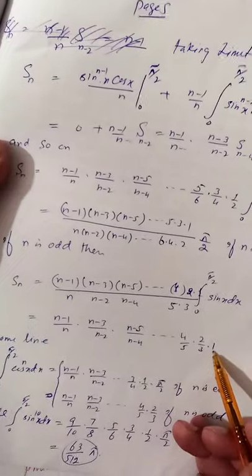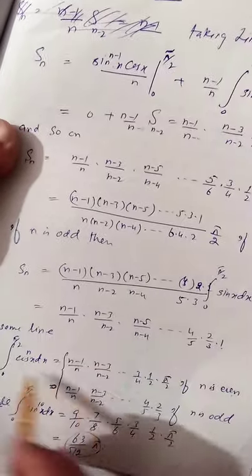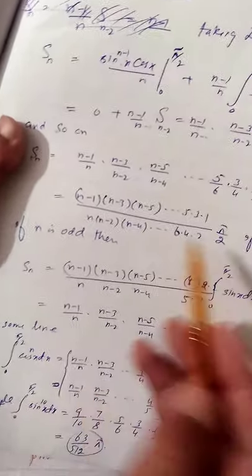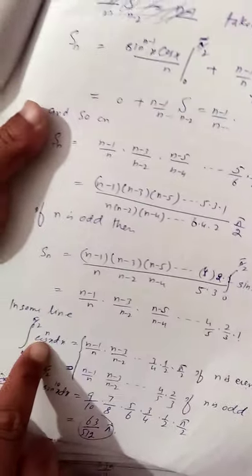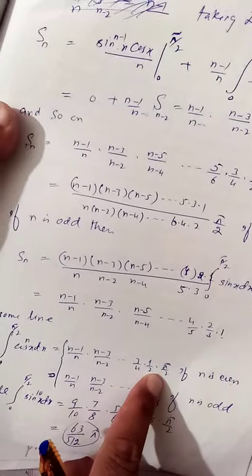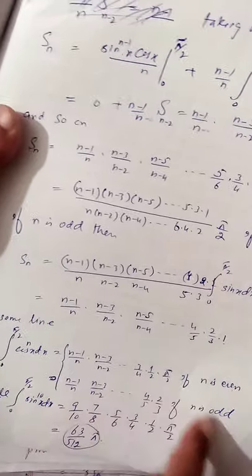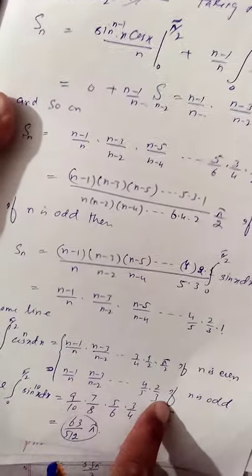Similarly, the same formula can be calculated for cosine: ∫₀^(π/2) cosⁿx dx. When n is even we get the product times π/2, and when n is odd we get the corresponding product of fractions without the π/2 factor.